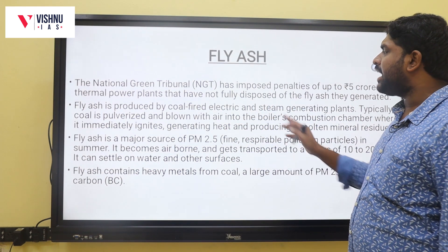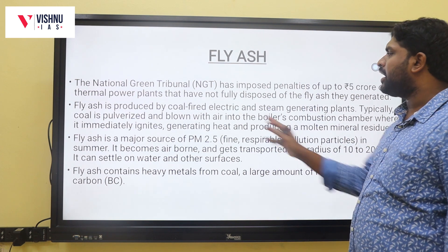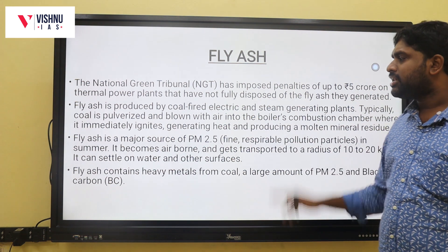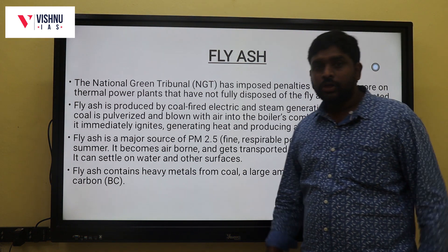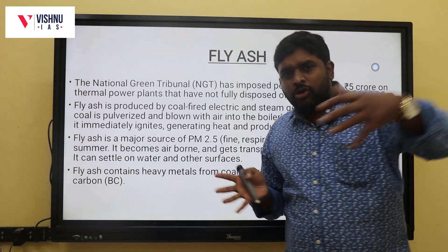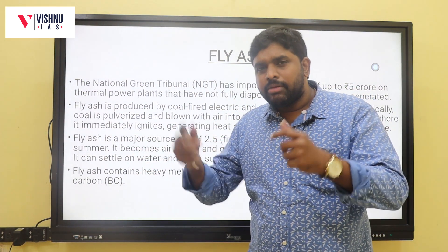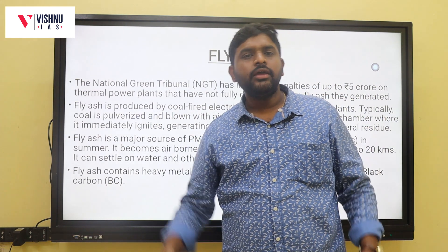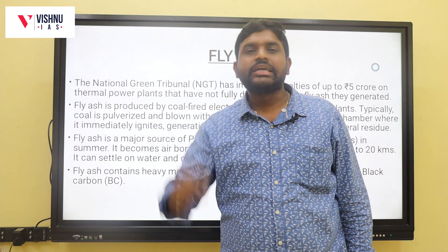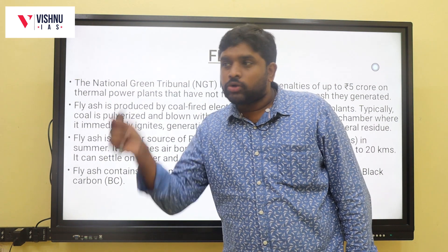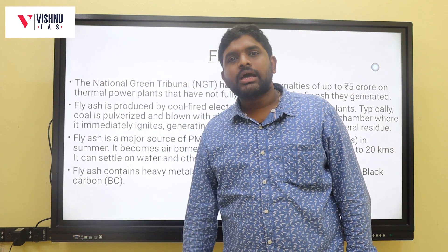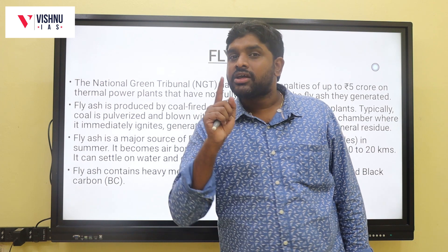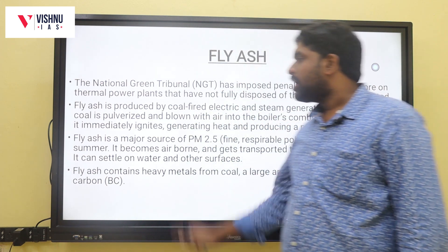Fly ash is produced by coal-fired electric and steam generating plants. Typically, coal is pulverized and blown with air into the boiler's combustion chamber where it immediately ignites, generating heat and producing a molten mineral residue. The coal along with oxygen and air is pumped into the boilers where it is burned. The steam released rotates the turbines, producing electricity. The outcome from this process at thermal power plants is fly ash.